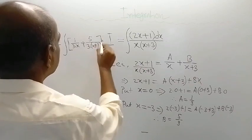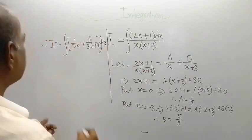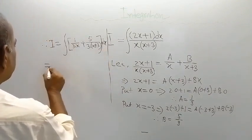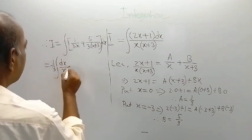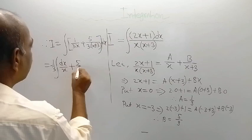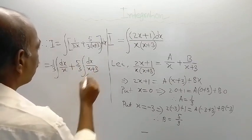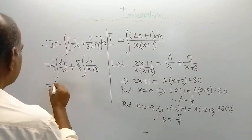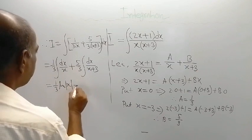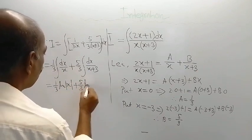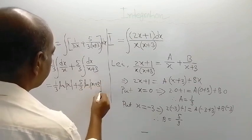Integration is so easy. Therefore, this can be written as 1 by 3 integration of dx by x, and here 5 by 3 integration of dx by x plus 3. So this is 1 third log of mod x plus 5 by 3 log of x plus 3 plus a constant of integration c.